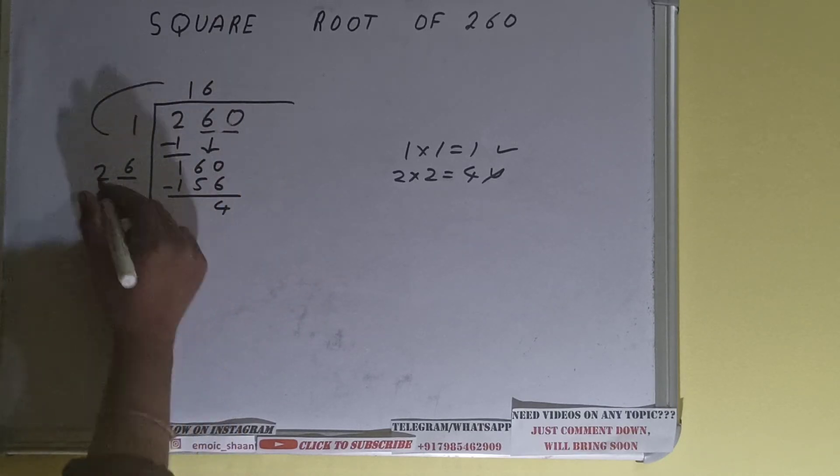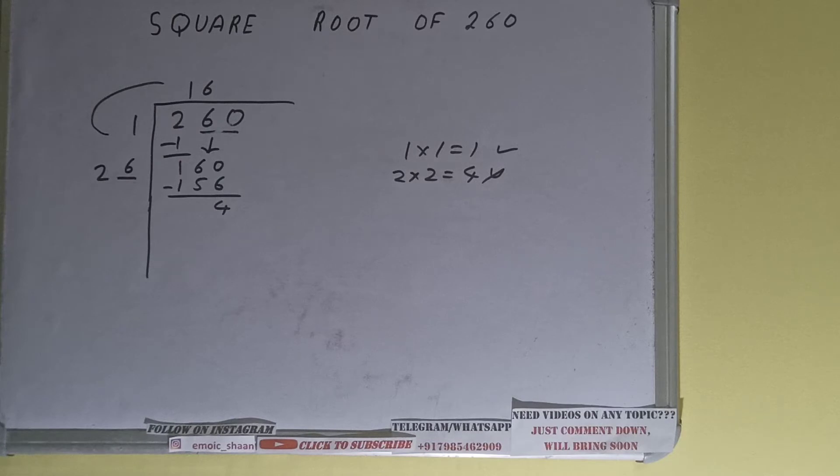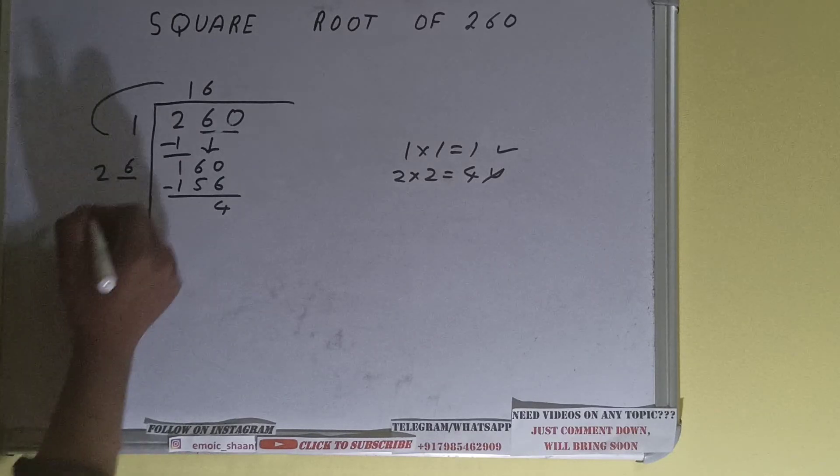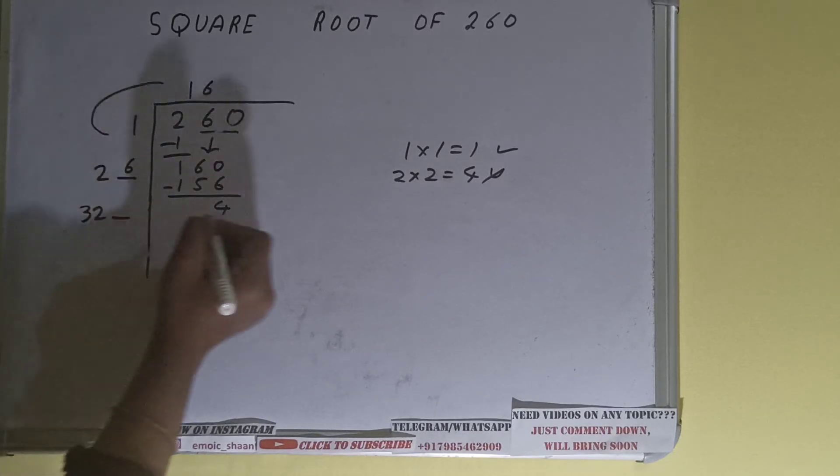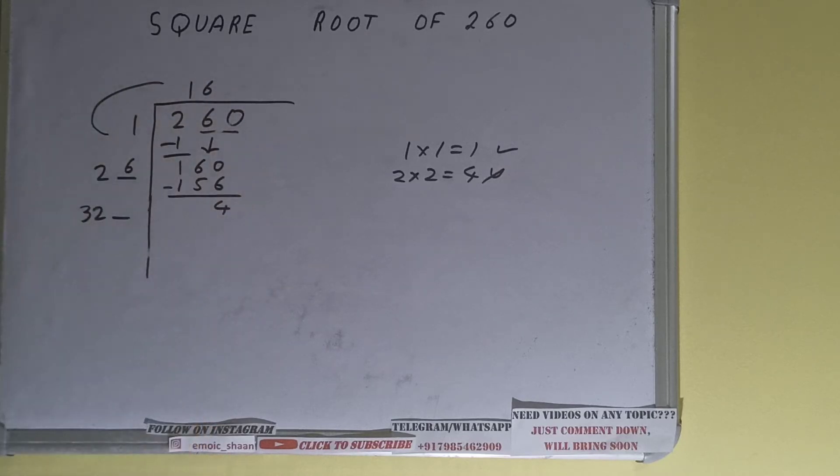We'll be left with four. Now 26 into 6 we did right, so add both. 26 plus 6 will be 32 and keep one digit extra over here. We need to make this number big so that we can divide.